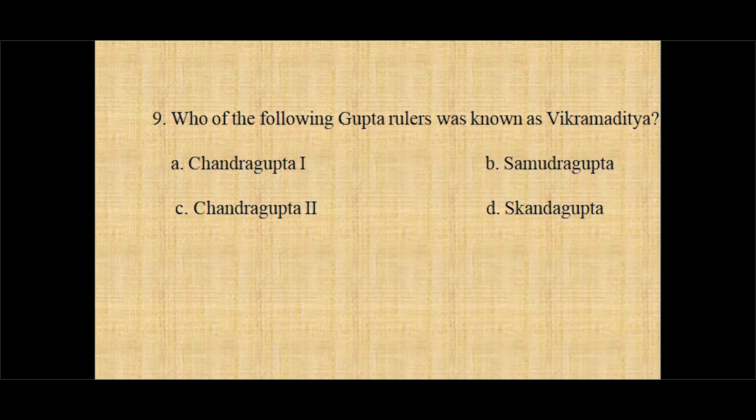Question number nine: Who among the following Gupta rulers was known as Vikramaditya? Option A Chandragupta I, option B Samudragupta, option C Chandragupta II, option D Skandagupta. And the correct answer is option C, Chandragupta II.